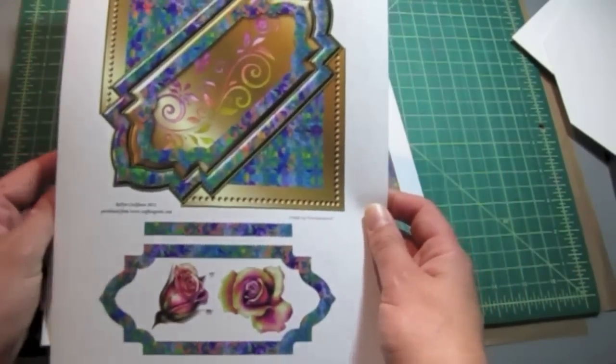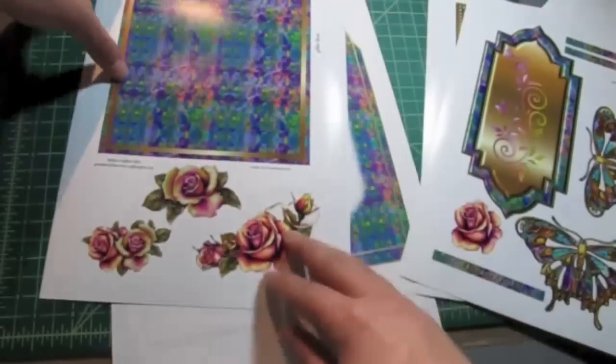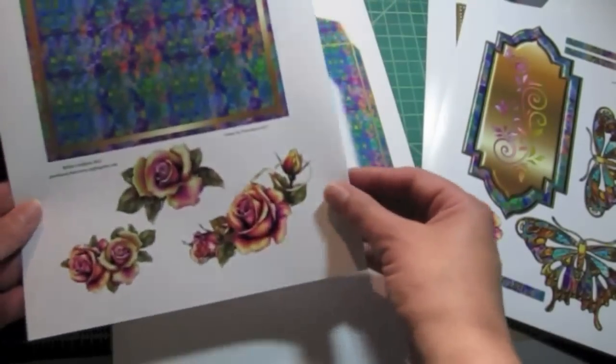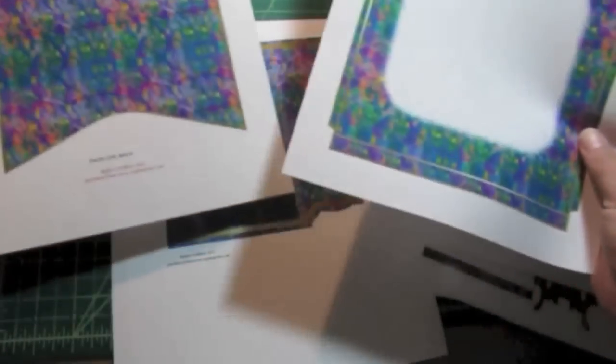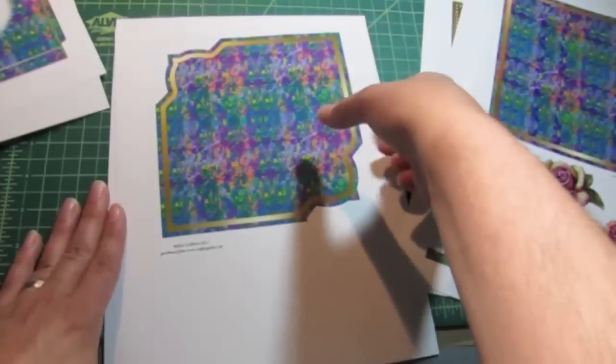So you have here, this is the main card front along with some of the decoupage. Here's the other decoupage elements. This is the back of the card with the roses and then we have the two sheets for the envelope and the inside.